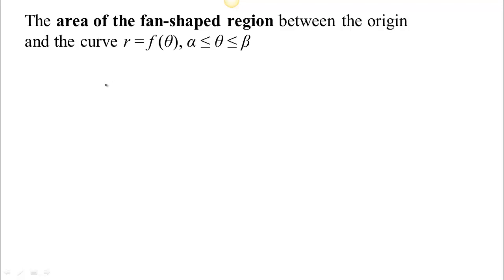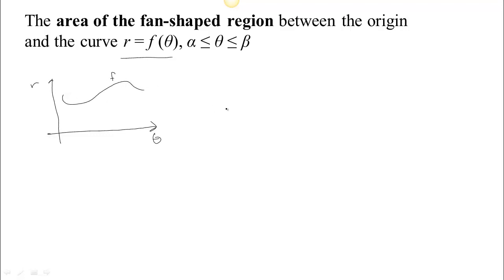We want to do some more calculus on polar curves — specifically some integrals related to polar curves. Suppose you have a polar curve of the form r equals f of theta. In theta-r space, r is some function of theta. We interpret each pair of angle and radius so that theta gives us the direction to face, and r gives us the distance to walk out. This converts to some curve in xy space.